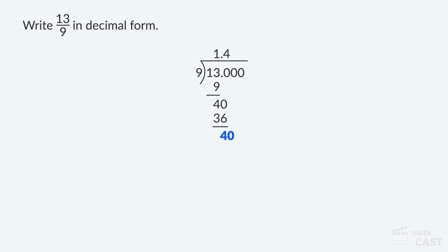Now bring down a zero from the hundredths place and divide 9 into 40. 9 divides into 40 four times, so we write a 4 in the quotient just above the zero. Subtract the product of 4 and 9 from 40: 40 minus 36 equals 4. Are you starting to see a pattern? Bring down a zero from the thousandths place and divide 9 into 40 again — 9 divides into 40 four times, so we write a 4 in the quotient. Subtract the product of 4 and 9 from 40.